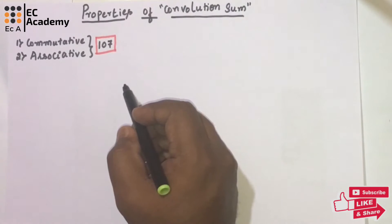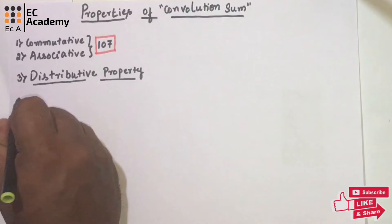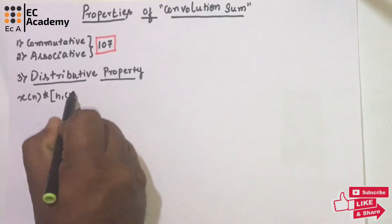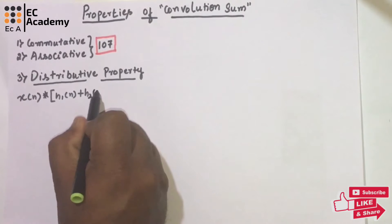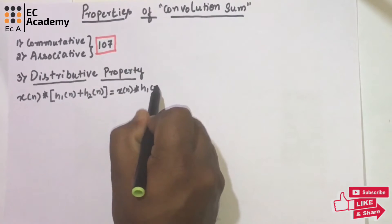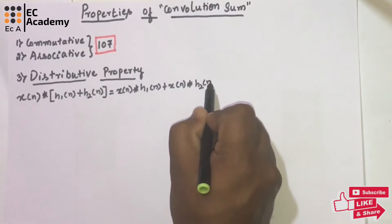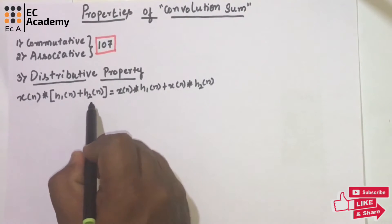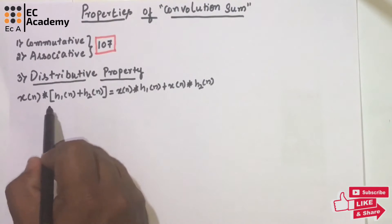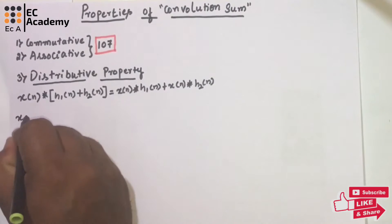The next property is the distributive property. The distributive property states that x(n) convoluted with h1(n) plus h2(n) can be written as x(n) convoluted with h1(n) plus x(n) convoluted with h2(n).